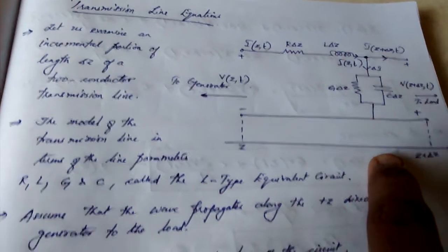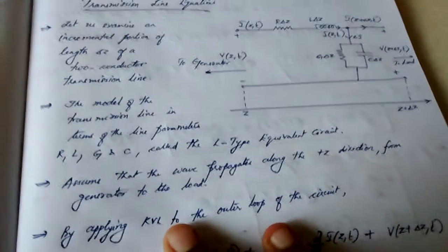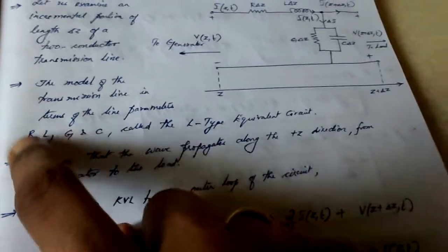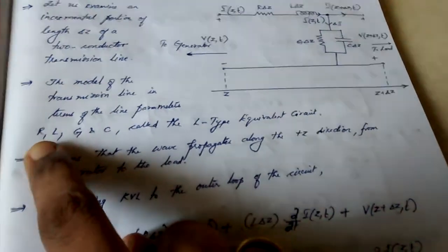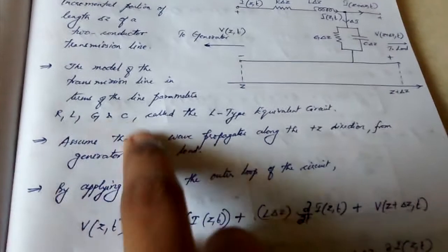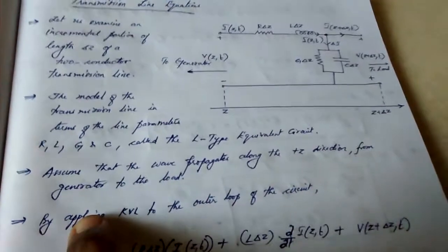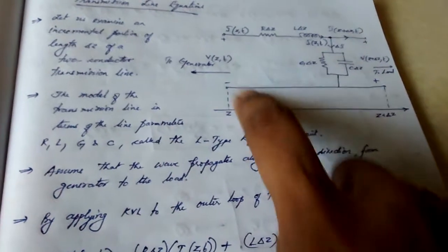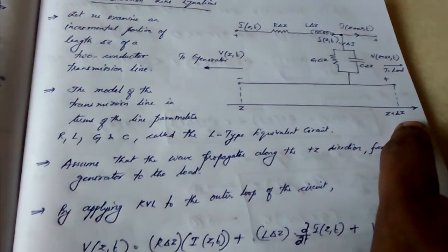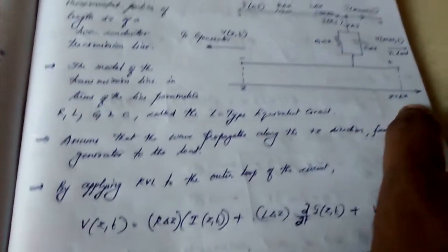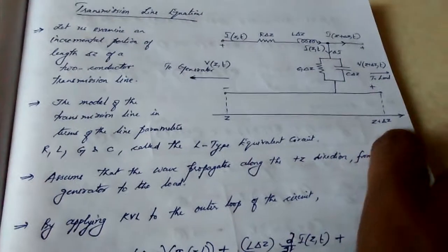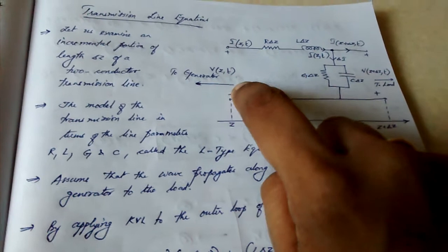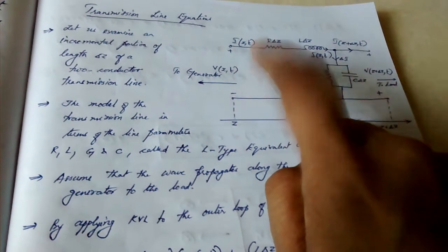Now we are going to derive the transmission line equations based on four parameters: R, L, G, and C. We are assuming that the wave is traveling from z to z plus delta z. We are going to apply KVL — Kirchhoff's Voltage Law — to this loop.